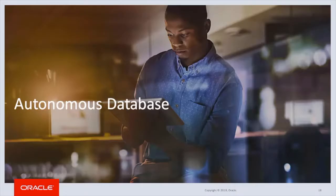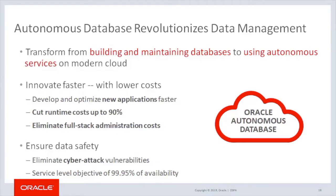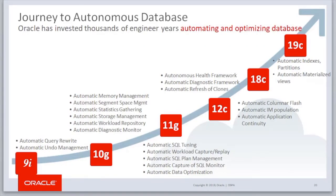Let's look at the autonomous database. Transform from building and maintaining database to using autonomous services on modern clouds. This allows you to: one, innovate faster with lower costs — developing and optimizing new applications faster, cutting runtime costs up to 90%, and eliminating full-stack administration costs; and number two, ensure data safety by eliminating cyber attack vulnerabilities and obtaining service level objectives of 99.995%. Starting in Oracle Database 9i, we began to introduce and mature many sophisticated automation capabilities, from memory management to workload monitoring and tuning, all of which are used in the autonomous database.